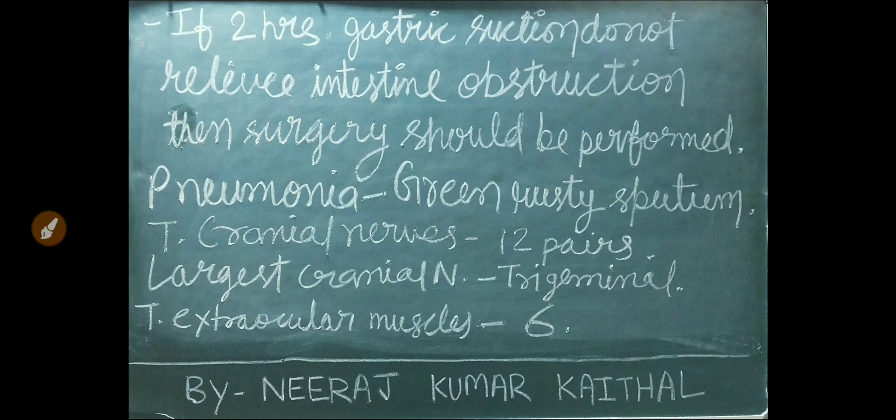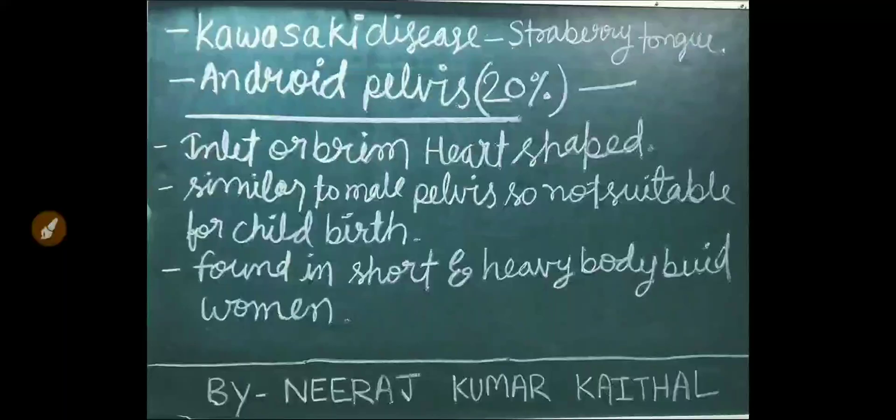Total cranial nerves are 12 pairs. The largest cranial nerve is trigeminal. Total extraocular muscles are 6. In Kawasaki disease, strawberry tongue is an important symptom.